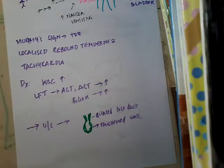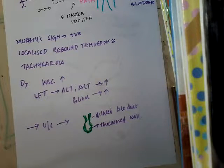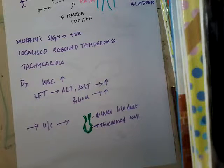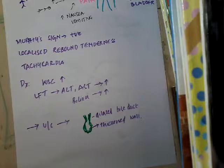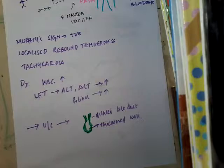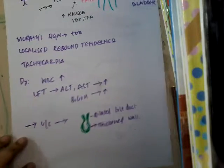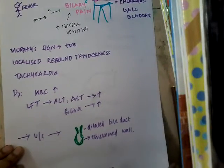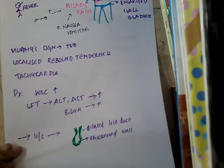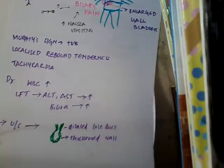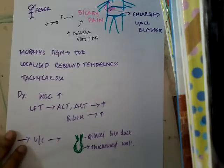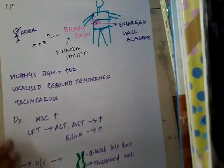For treatment of calculous cholecystitis, antibiotics are given if infection is suspected, and analgesics are given for pain. Because there is a stone in the gallbladder, the best treatment is cholecystectomy — but always wait and watch until symptoms subside before going for cholecystectomy.